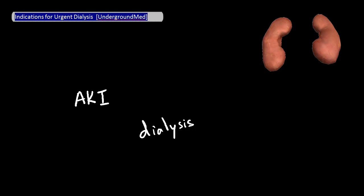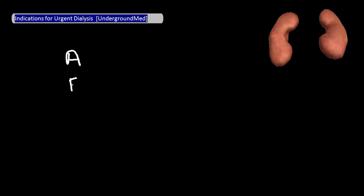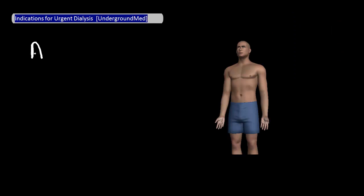Remember that the kidneys aren't functioning to filter out waste from the blood, so these waste products build up, and it's the buildup of these substances that causes homeostatic disturbances, leading to symptoms and possibly life-threatening complications. The mnemonic that everyone uses to remember this is A-E-I-O-U, essentially the vowels of the alphabet. A stands for acid-base disturbances.